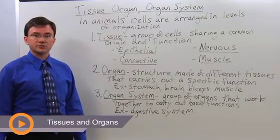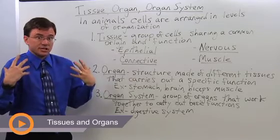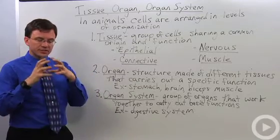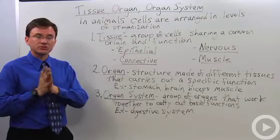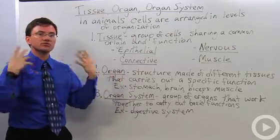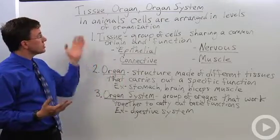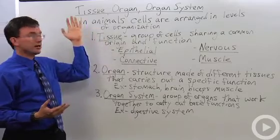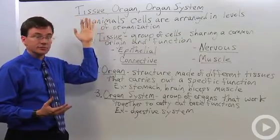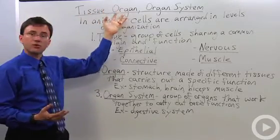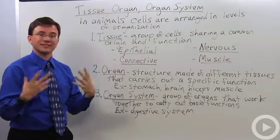In multicellular creatures, much like ourselves, when you go beyond having just a single kind of cell, you start having to organize them when you study them. And in animals, we talk about how cells can be arranged into these levels, starting with tissues, then organs, and finally winding up with organ systems.